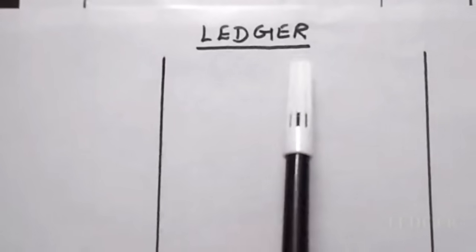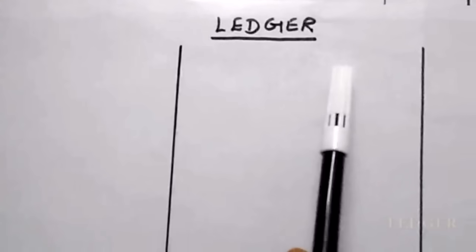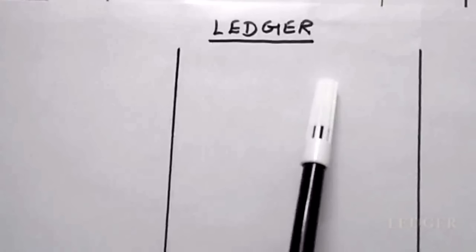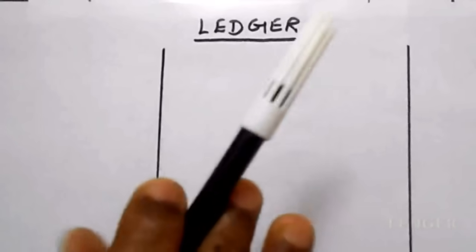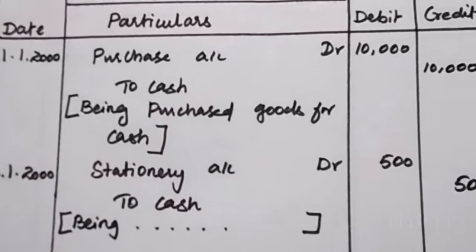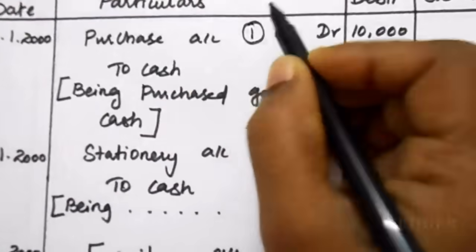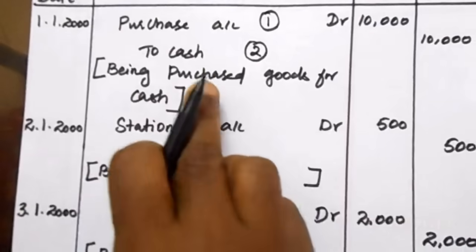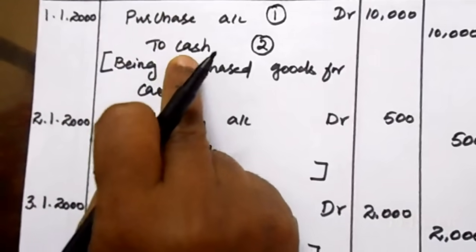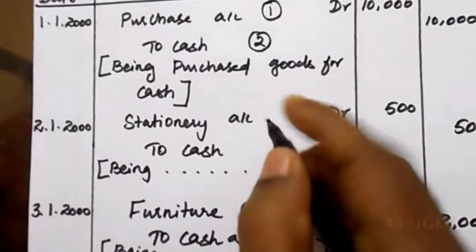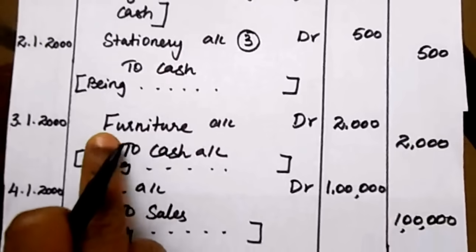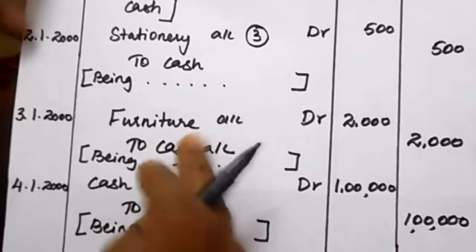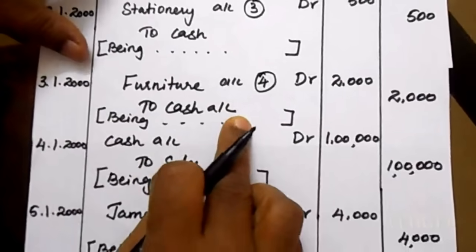Ledger is the second important stage in the accounting cycle. All recorded business transactions are grouped on a predetermined basis. Such classification takes the form of accounts in a separate book known as ledger. From the first entry — purchase account debit to cash — you need to prepare a purchase account and a cash account. For the stationery entry, you need a stationery account; cash account already exists so you need not open it again. For furniture, open a new furniture account.